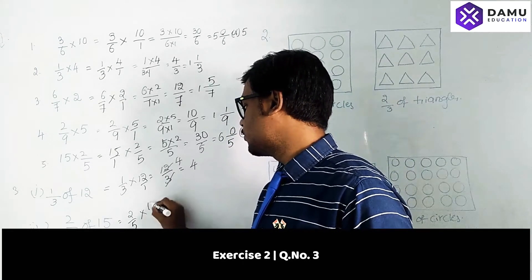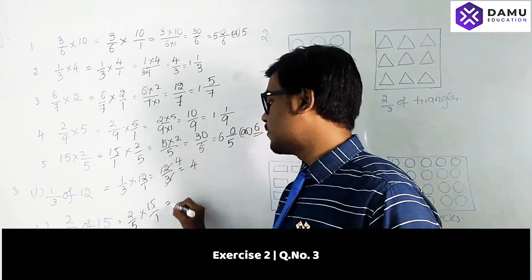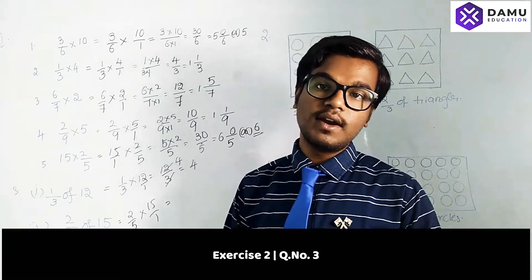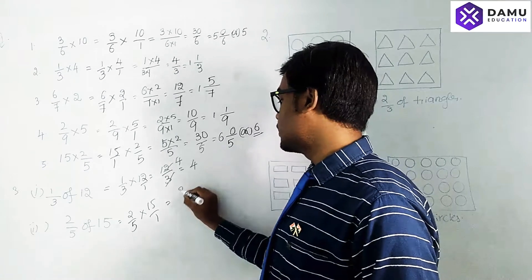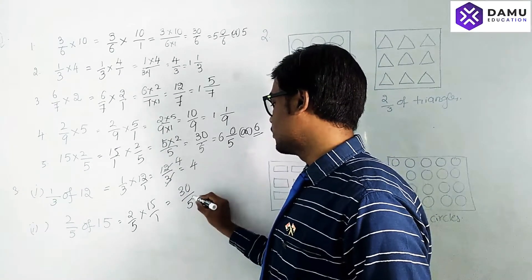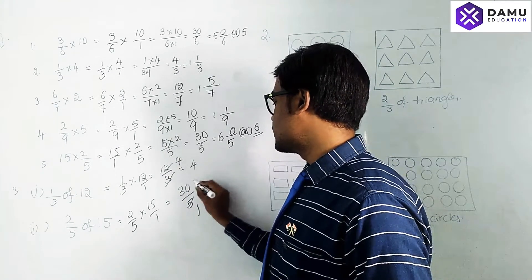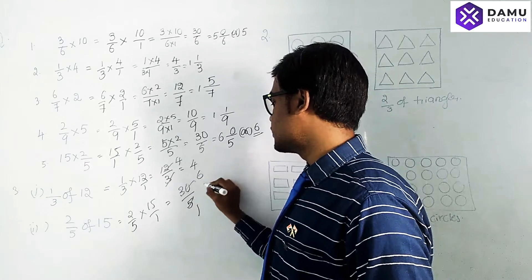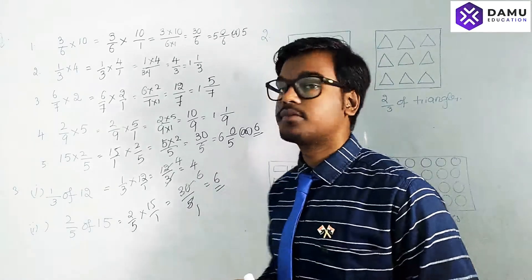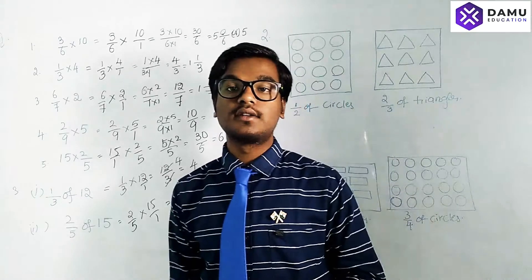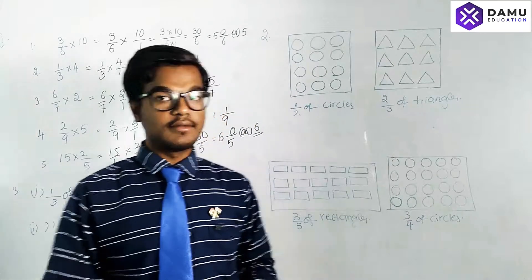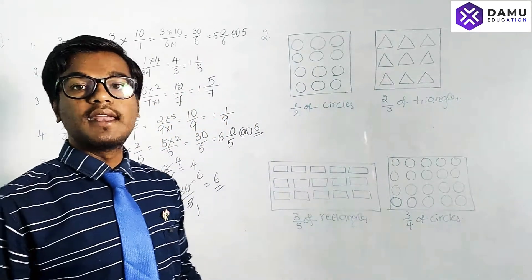Similarly, 2/5 × 15 is 15/1 into 2/5. So 15 × 2 = 30 by 5. Five ones are 5, and 5 × 6 = 30, giving the answer 6.